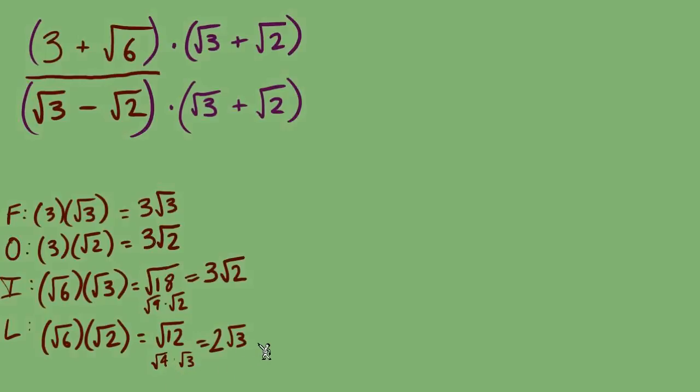After we've done these four multiplications, we are looking for any like terms to combine. We can combine terms if they have the same radical part. So outer and inner are like terms, they both have radical 2. We will add the coefficients, the number out front: 3 plus 3, 6 radical 2.